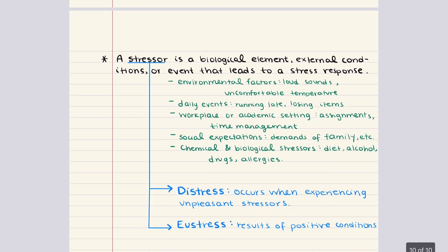A stressor is a biological element, external condition, or event that leads to a stress response. Common stressors include environmental factors, daily events, workplace or academic settings, social expectations, and chemical and biological stressors. Stressors can also be psychological. They are classified as either causing distress — when experiencing unpleasant stressors — or eustress, which results from positive conditions such as graduating from college, getting married, or scoring a perfect MCAT score. Any event requiring a person to change or adapt their lifestyle leads to some sort of stress. Stress levels can be measured in life change units using a system called the social readjustment rating scale.